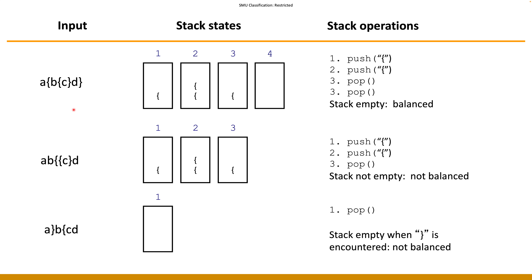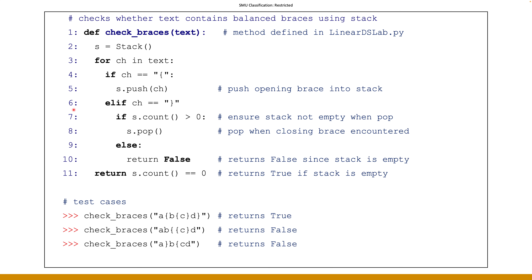If we turn this into an implementation, the idea is simple: create a stack, then for each character check whether it is an opening brace — if so, push. If it is a closing brace, check the count. If count is greater than zero, meaning there are elements in the stack, do the pop. Otherwise you're popping on an empty stack — return false. At the end, check whether the count of the stack equals zero: if true, everything is balanced; otherwise there are unclosed opening braces remaining.